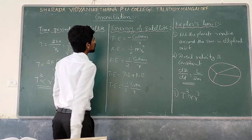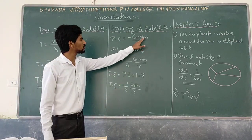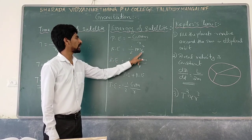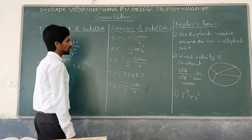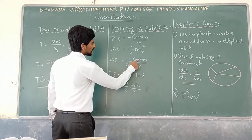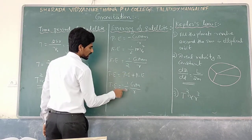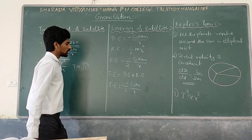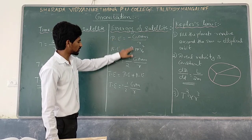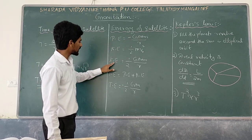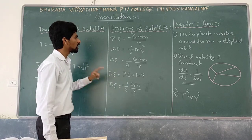Next is energy of the satellite. The potential energy is minus GM1 by R into mass of the satellite. Kinetic energy is half m v squared, where v is the orbital velocity, which equals root of GM by R. So kinetic energy is half GM by R into m. Total energy equals potential energy plus kinetic energy, giving minus half GM by R into m. The total energy is half the potential energy, and kinetic energy equals total energy in magnitude with opposite sign.